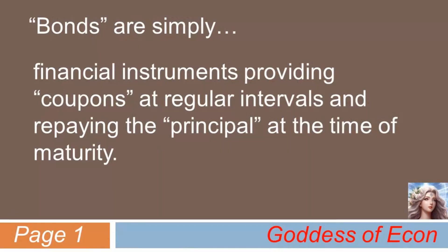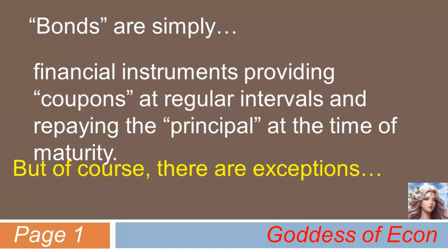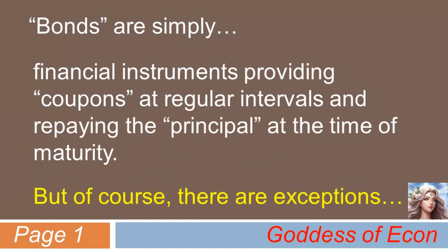First, what on heaven and earth are bonds? Well, simply put, bonds are financial instruments providing coupons at regular intervals and repaying the principal at the time of maturity. But of course, there are some exceptions — not all bonds pay coupons at regular intervals or repay the principal amount on the maturity date. Bond structures can also be customized to meet the needs of specific investors. But in general, it is safe to assume that bonds pay coupons regularly until the maturity date, on which the principal is also repaid.